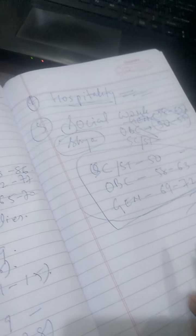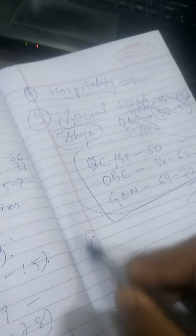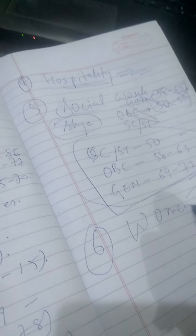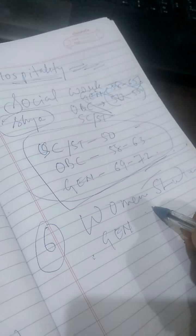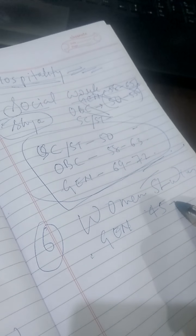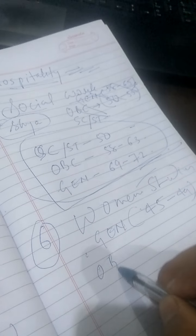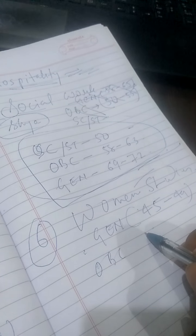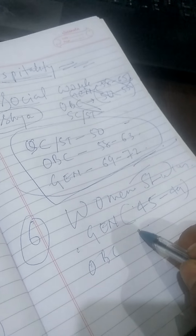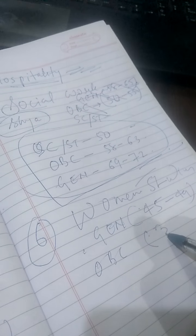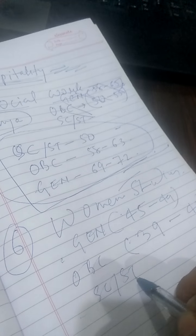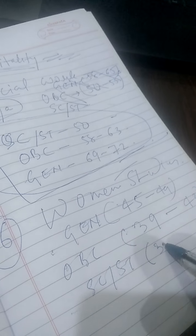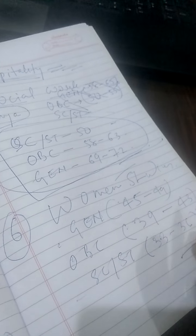For my department — Women Studies — the cutoff for the previous year for general was 45 plus, and this year it would be around 45 to 49. For OBC, previously it was 36; this year with a slight increase in interest, it should be around 38 to 43. For SC/ST, scoring around 33 to 36 should land you in Women Studies.